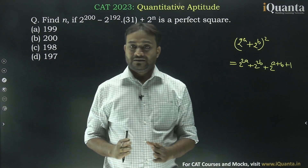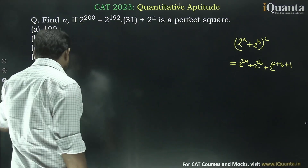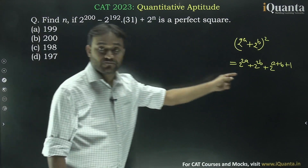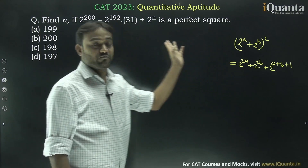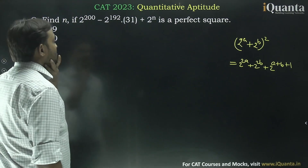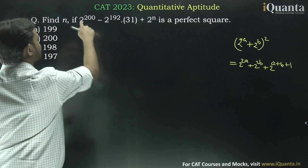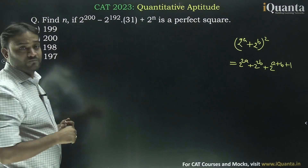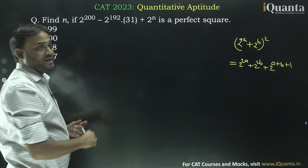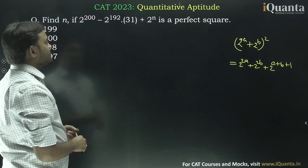This is what we need to do here — we need to convert all these terms into this form so that we can make it a perfect square. This term is already in the form of 2 to the power n, and this term is already in the form of 2 to the power n. We need to make this middle term as 2 to the power n.